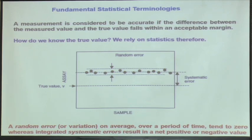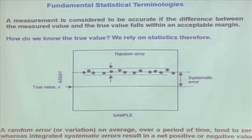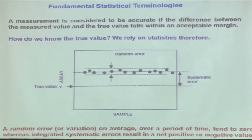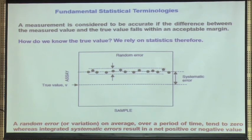But the question is how do we know the true value — that is the problem. So we rely on statistics. Suppose I repeat a test and get values like 3, 6, 9, plus 5, 14, and I am getting a similar value and we say the result is very accurate. No — it does not guarantee the accuracy of your measurement; it guarantees the precision of your measurement.